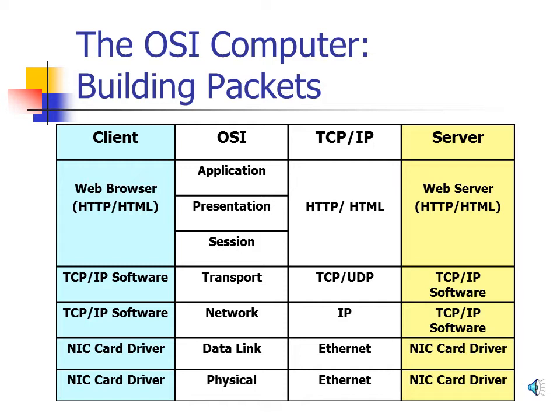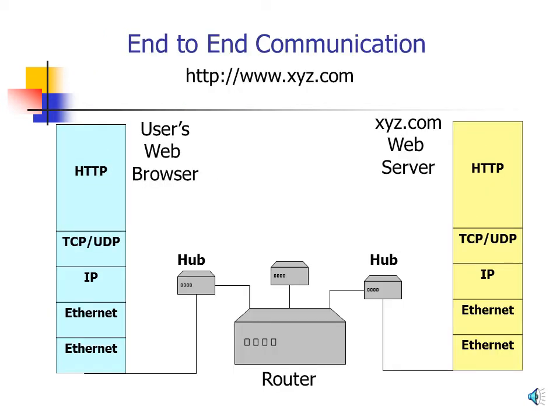In our end-to-end communication example, we have a web browser on the left represented by a block diagram and a web server on the right. They're both connected to hubs, and those hubs are connected to a router. In our example, the user types http://www.xyz.com — the URL of the web server — into the web browser. We'll now track the creation of packets and how they travel through the network.